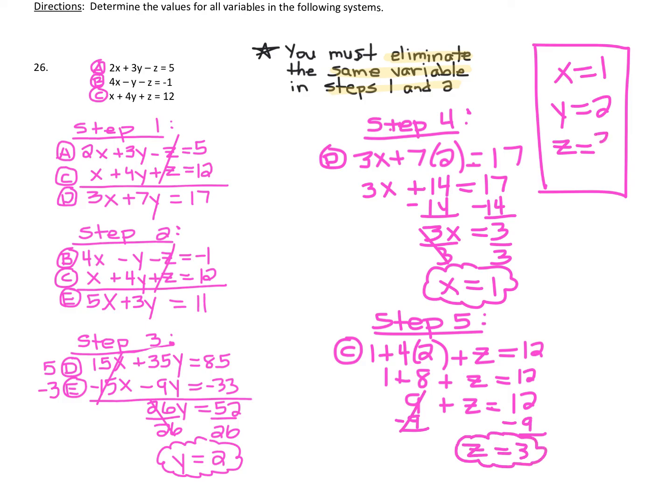So that's our third and final variable. X equals 1, Y equals 2, and Z equals 3. These problems are long and take a little practice, but once you practice them it's really the same process over and over again. The more of these you do, the easier they become.